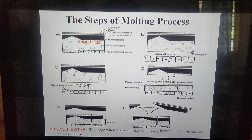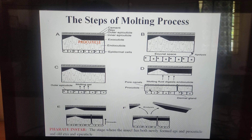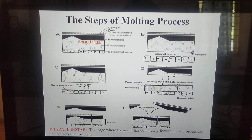After formation of the outer epicuticle, the procuticle below the epicuticle is also formed. After the formation of this procuticle, the molting gel converts into molting fluid, which helps in the digestion and absorption of the endocuticle. This molting fluid is rich in enzymes.